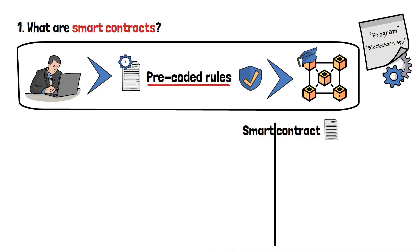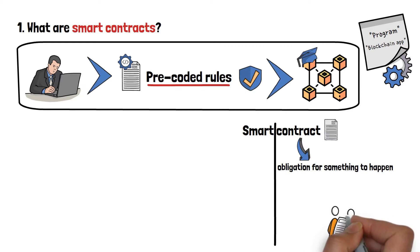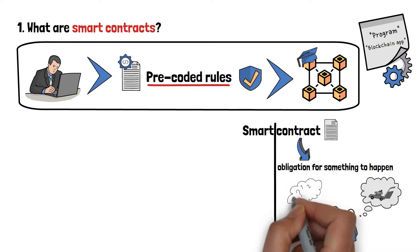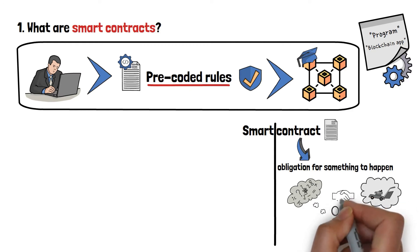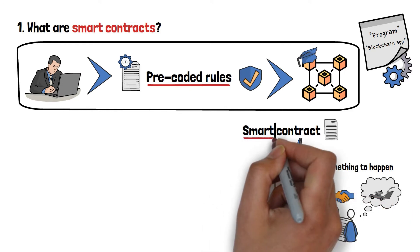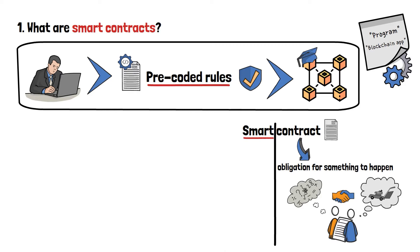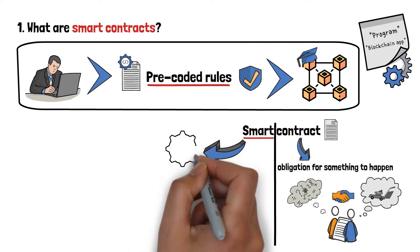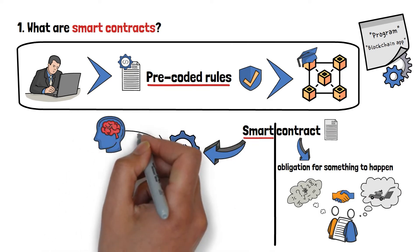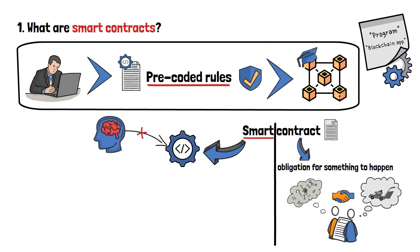As the name implies, they are contractual obligations for something to happen. In other words, if you make an agreement with your friend that you'll mow their lawn if they help you with your math homework, this can be considered a contract. The smart part in the term 'smart contract' is the important bit. Put simply, it signifies that the contract will be executed automatically, without human intervention, and that once it's set, it cannot be altered.